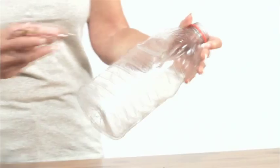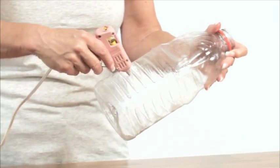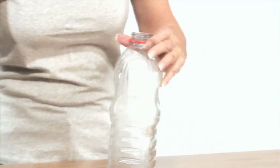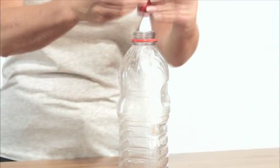Have an adult use a hot glue gun to burn a small hole in the side of a rigid plastic bottle about one inch from the bottom of the container. If you don't have a hot glue gun, the adult can also use a nail to poke the hole.